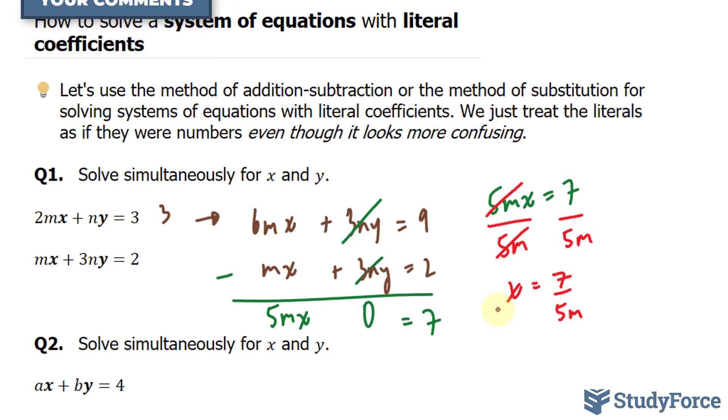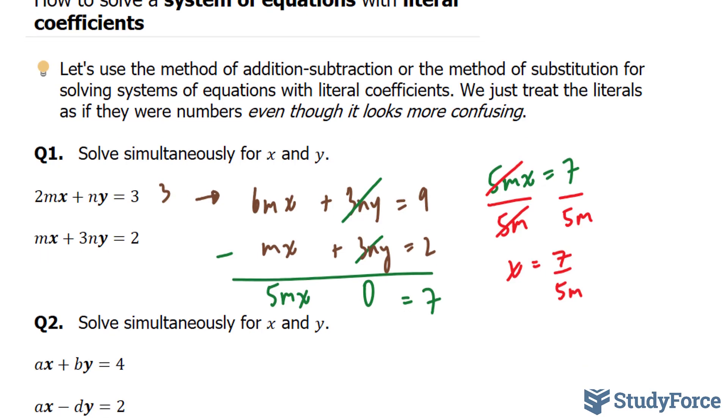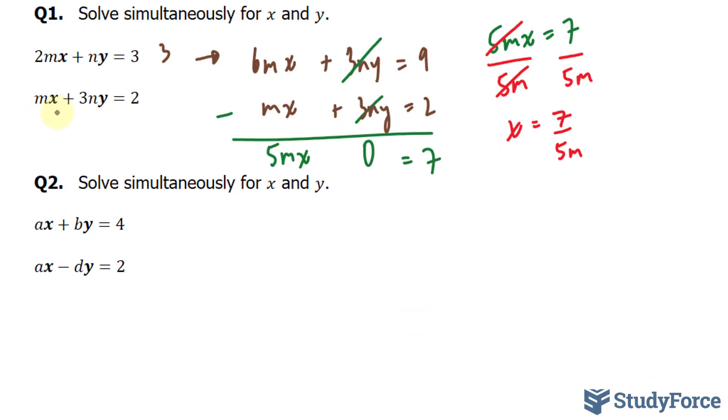And to do that, we'll take this number and substitute it into any of these two equations. I'm going to substitute it into the bottom one, just randomly. I could have just as well substituted it into the first one. It doesn't really matter. Now if I substitute 7 over 5m into here, I'll end up with m times 7 over 5m. Notice that I've taken this and placed it right into here. Plus 3ny is equal to 2.